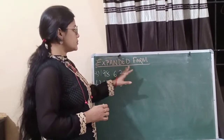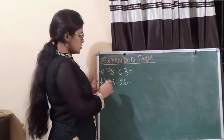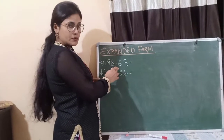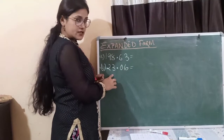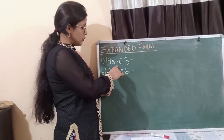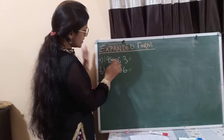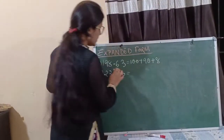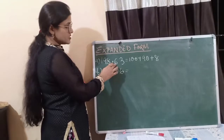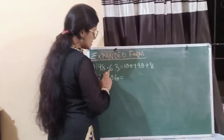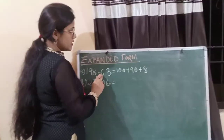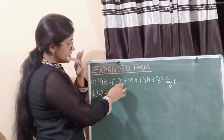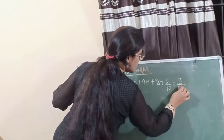So now we are going to start with expanded form. How can we expand decimal numbers? A decimal number has a whole number part and a decimal part, divided by the decimal point. You all know how to write a whole number in expanded form. So the whole number part can be written as 100 plus 90 plus 8. Then as the decimal part begins, this place is the 10ths place — that is 1 by 10. So this can be represented as 6 by 10. Then 3 is in the 100ths place, so 3 will be written as 3 by 100.